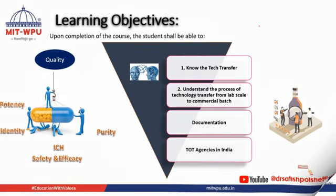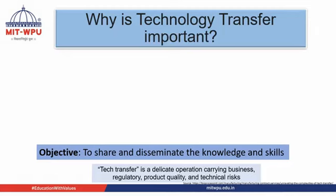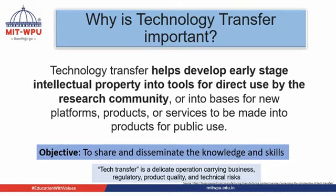What is the basic objective of this technology transfer? The basic objective of technology transfer is to share and disseminate the knowledge and skills. Because technology transfer is a logical procedure where we transfer the documentation, professional skills and expertise along with the technology to the manufacturing site — we can say a GMP site where the full facility is available. Technology transfer helps develop early stage intellectual property into tools for direct use by the research community, or into the basis of new platform products or services to be made into products for public use. That is the basic fundamental of technology transfer.